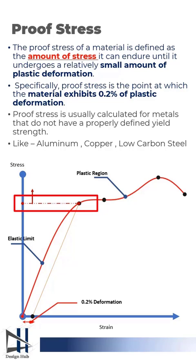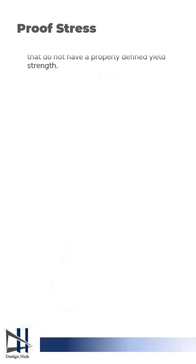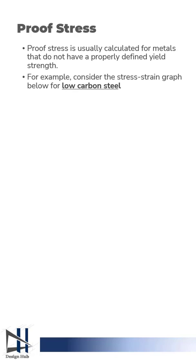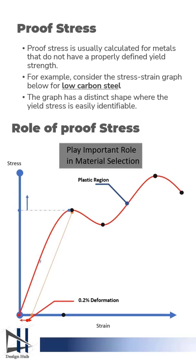The role of proof stress comes into play during the material selection process. As proof stress gives the value of stress beyond which the material undergoes permanent plastic deformation, it decides the value of external stress that can be applied to it. Any increase of stress beyond the proof stress results in the occurrence of plastic deformation, hence resulting in fracture.